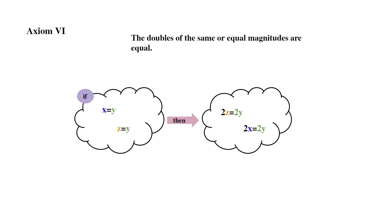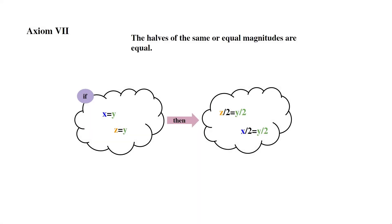Axiom 6: The doubles of the same or equal magnitudes are equal. If x equals y and z equals y, then 2z equals 2y and 2x equals 2y. Axiom 7: The halves of the same or equal magnitudes are equal. If x equals y and z equals y, then z divided by 2 equals y divided by 2, and x divided by 2 equals y divided by 2.